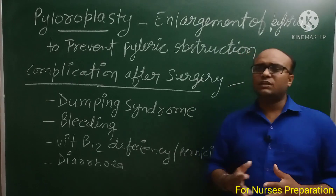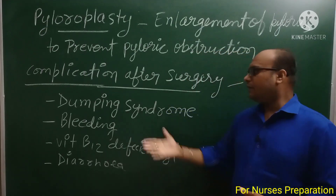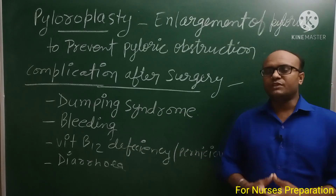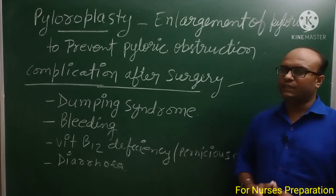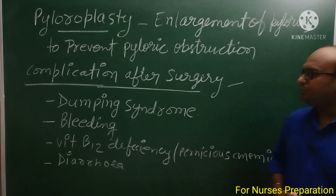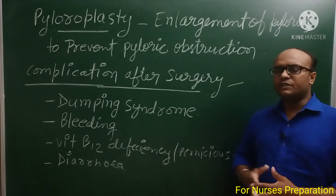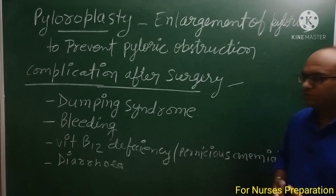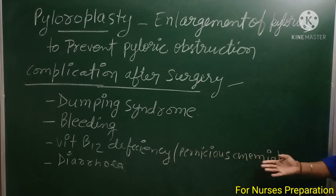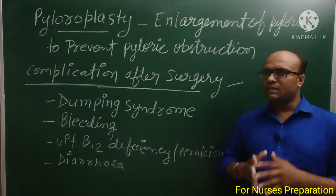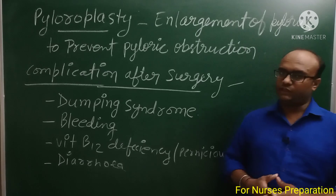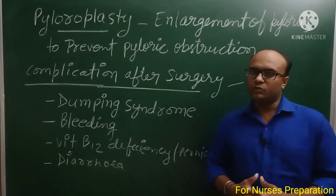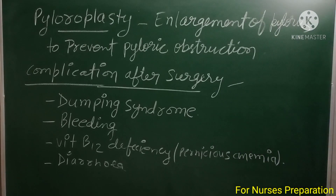इन सारी surgeries के बाद person के अंदर कुछ complications भी देखने को मिल सकते हैं। सबसे पहले है dumping syndrome — rapid emptying of stomach। ये complications बहुत important हैं, यहाँ से questions भी पूछे जाते हैं। After surgery, bleeding is a common complication। Vitamin B12 deficiency that causes pernicious anemia — person में vitamin B12 की deficiency हो जाती है जिससे pernicious anemia develop हो सकता है। After surgery, diarrhea also may be reported by the patient।